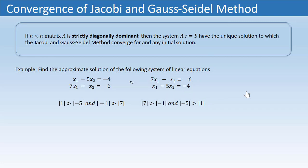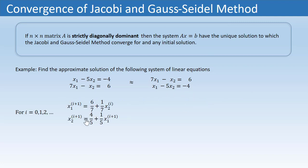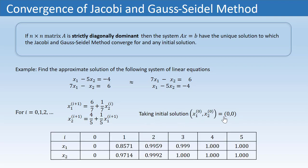Let's solve this rearranged system using Gauss-Seidel method. Here is the corresponding iterative scheme. If we take the initial solution as (0, 0), then the approximate solutions up to the fifth iteration can be seen in this table. We can notice that the solutions of x1 and x2 are approaching the values 1 and 1, which is exactly the exact solution of this system.